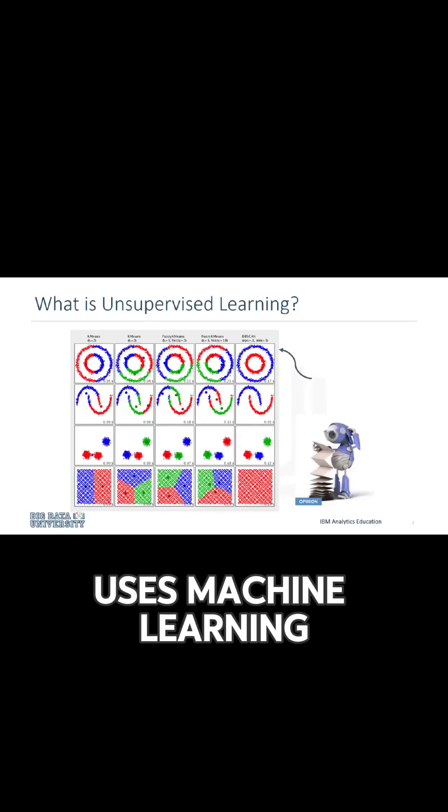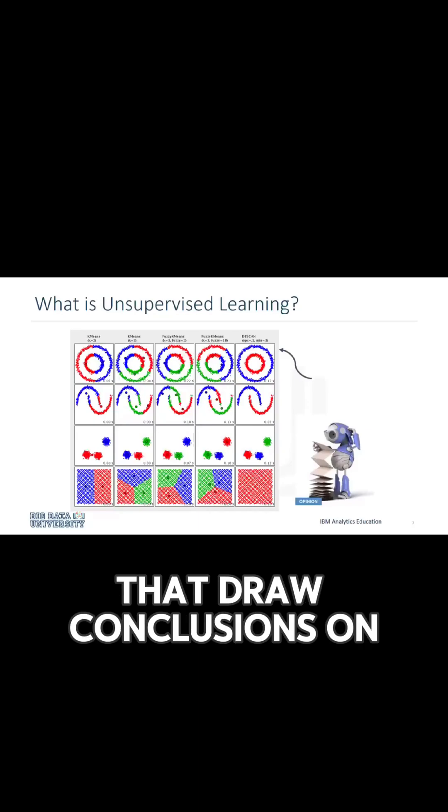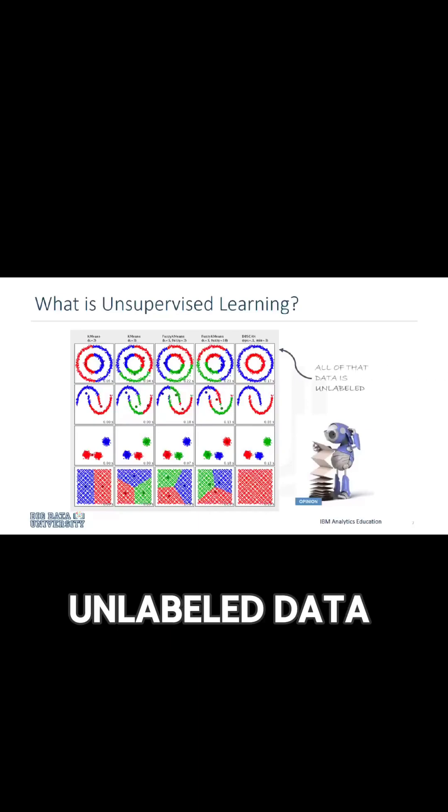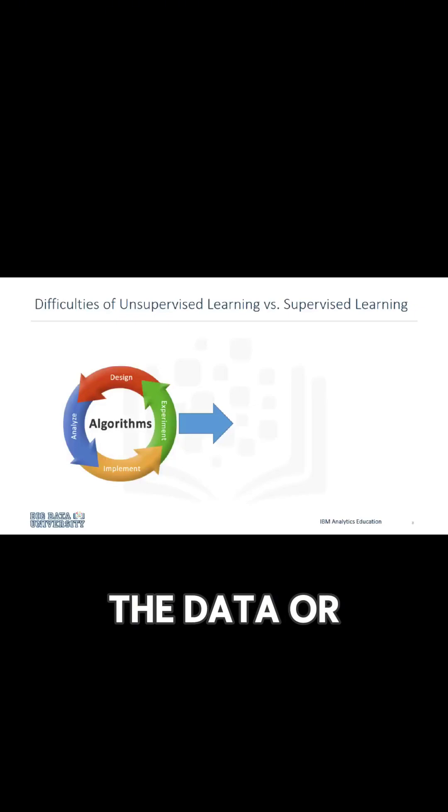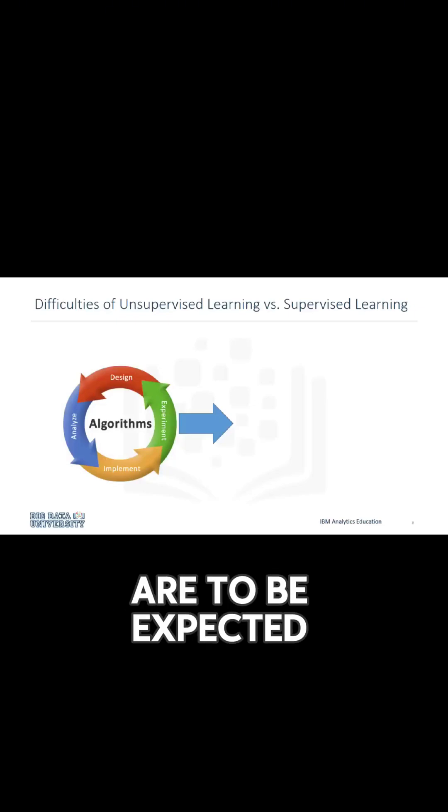Unsupervised learning uses machine learning algorithms that draw conclusions on unlabeled data. Unsupervised learning has more difficult algorithms than supervised learning since we know little to no information about the data or the outcomes that are to be expected.